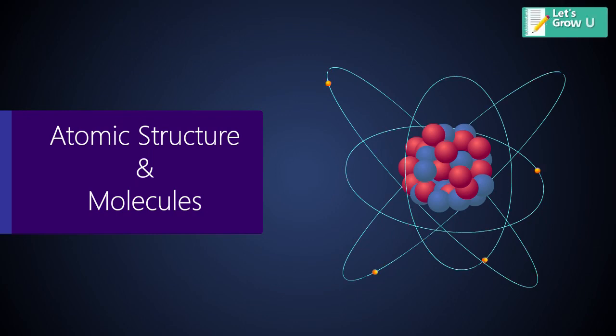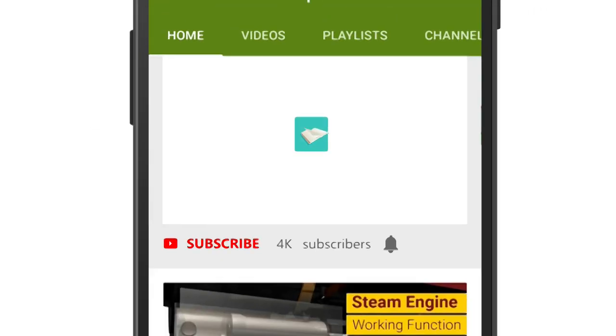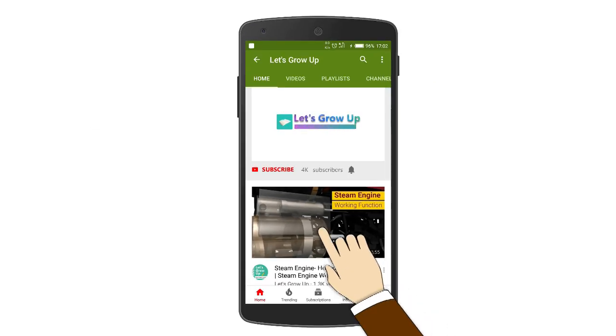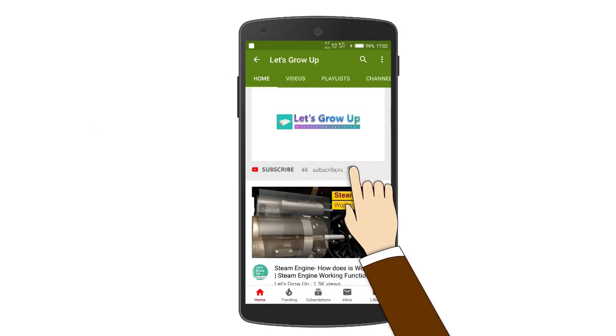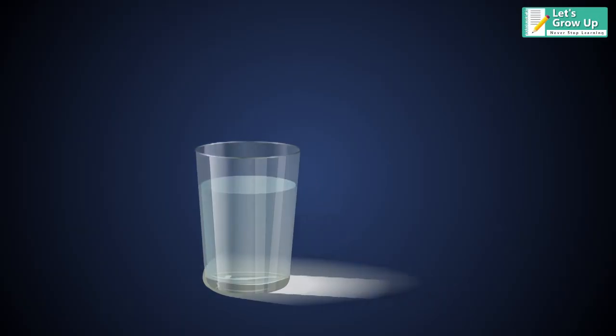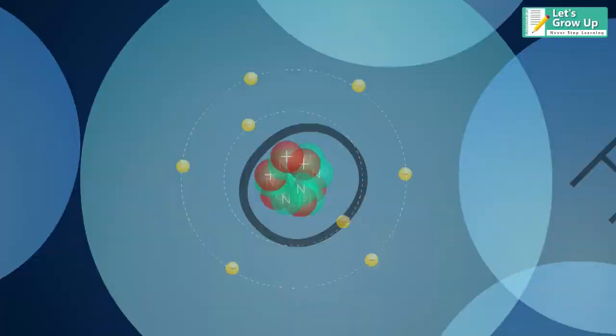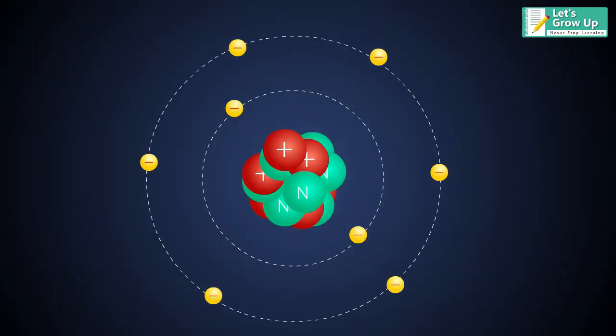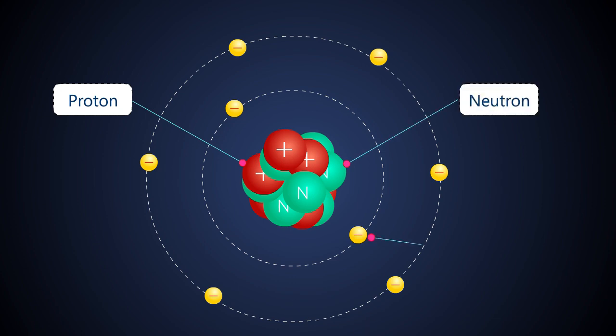Atomic Structure and Molecule. Atom is the basic unit of matter which is made up of three subatomic particles called protons, neutrons, and electrons.